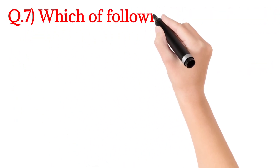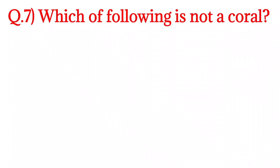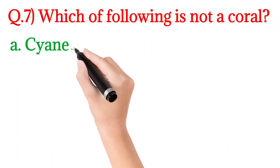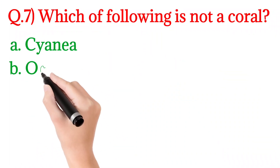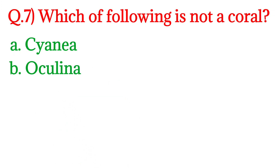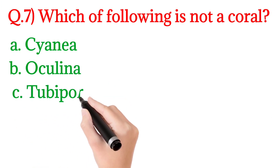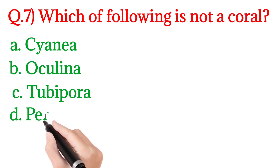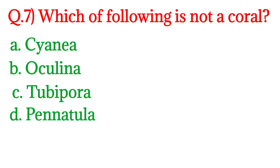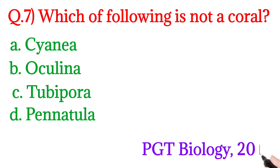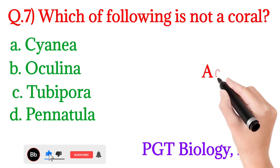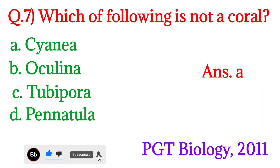Next question number 7: Which of the following is not a coral — इनमें से कौन एक coral नहीं है। Option A is Sainia, Option B is Oculina, Option C is Tubipora, and Option D is Pennatula. यह question PGT Biology 2011 में पूछा गया था। इसका answer होगा Option number A — Sainia. Sainia में coral reef नहीं होता है।